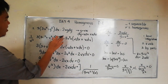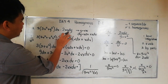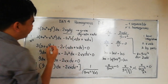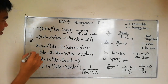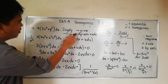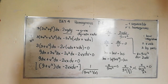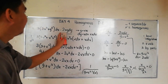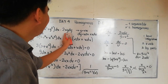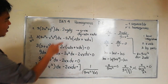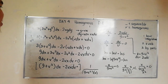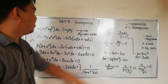This term is simpler, so we use the substitution: let y equal to vx. That's how I memorize the homogeneous method — y = vx, so dy equals v dx plus x dv.